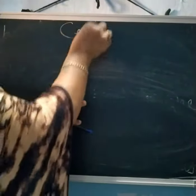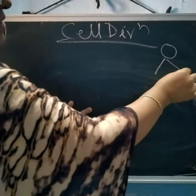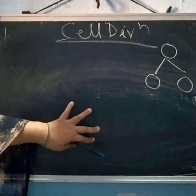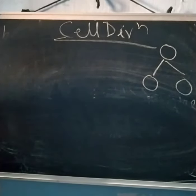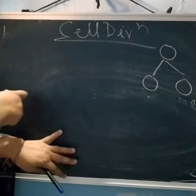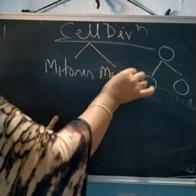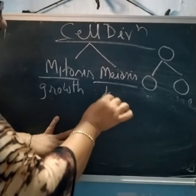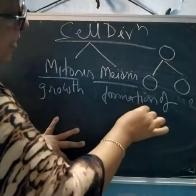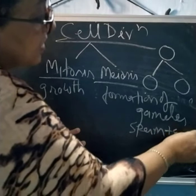Cell division is the process by which a parent cell, after growth and replication of its components, divides to form two daughter cells. Cell division is of two major types: mitosis and meiosis. Mitosis helps in growth, while meiosis is involved in the formation of gametes. Gametes are the sperm and egg cells.